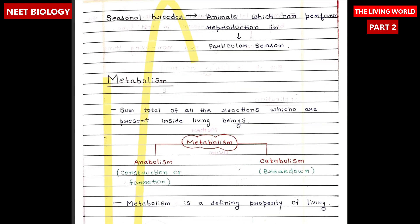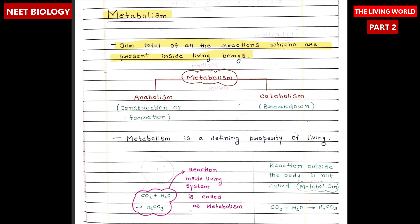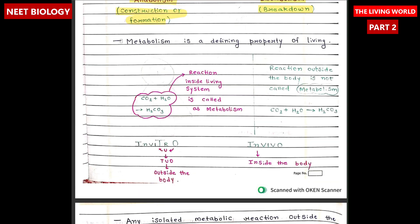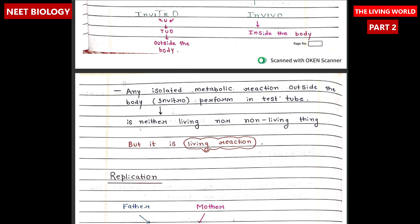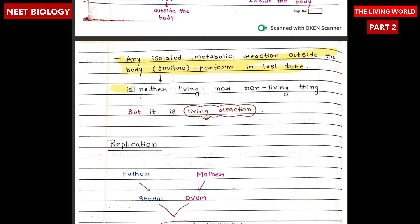Metabolism is of two types: anabolism and catabolism. Anabolism is construction or formation and catabolism is breakdown. Metabolism is a defining property of living. Any isolated metabolic reaction outside the body performed in a test tube is neither a living nor a non-living thing, but it is a living reaction.